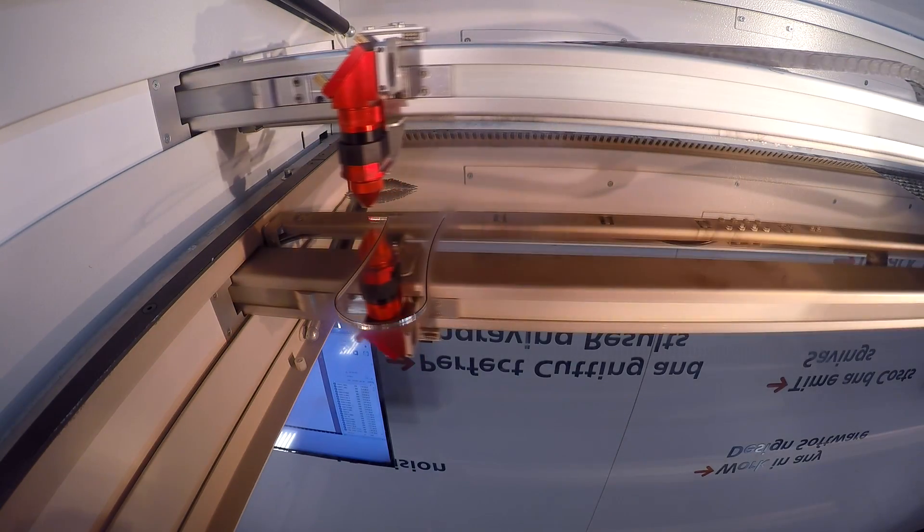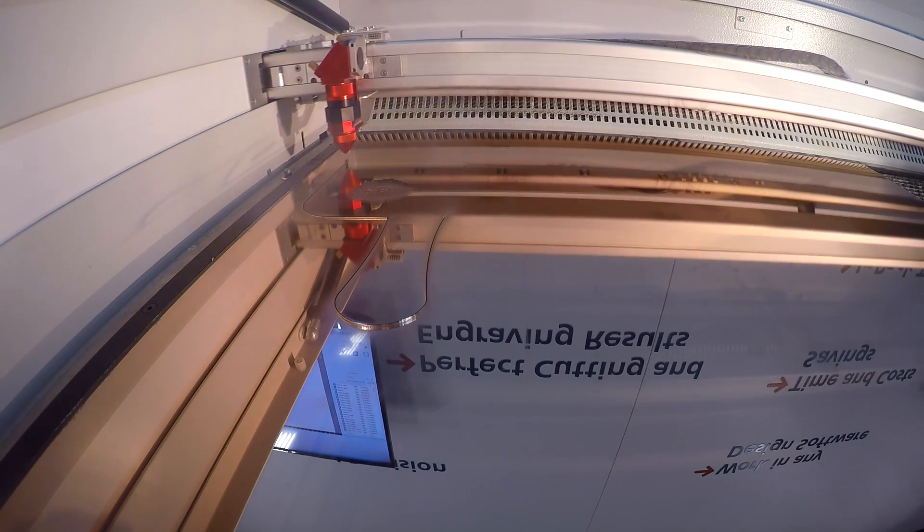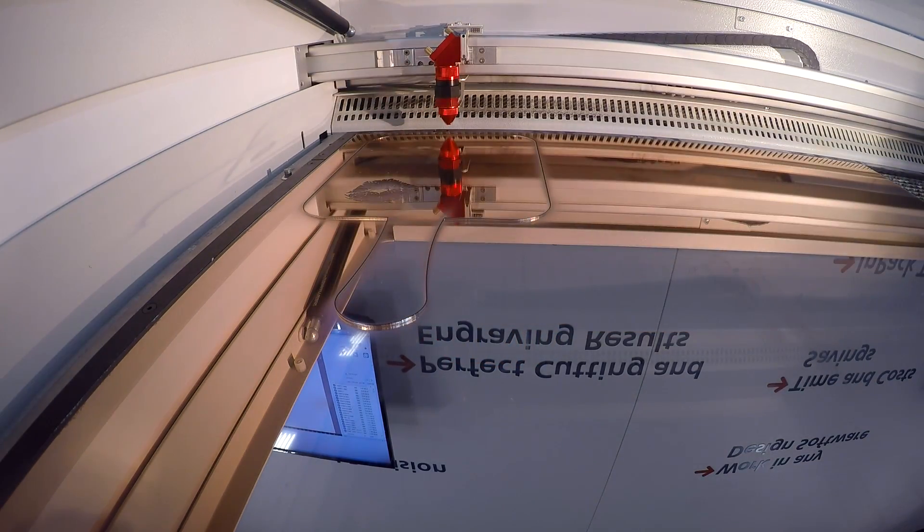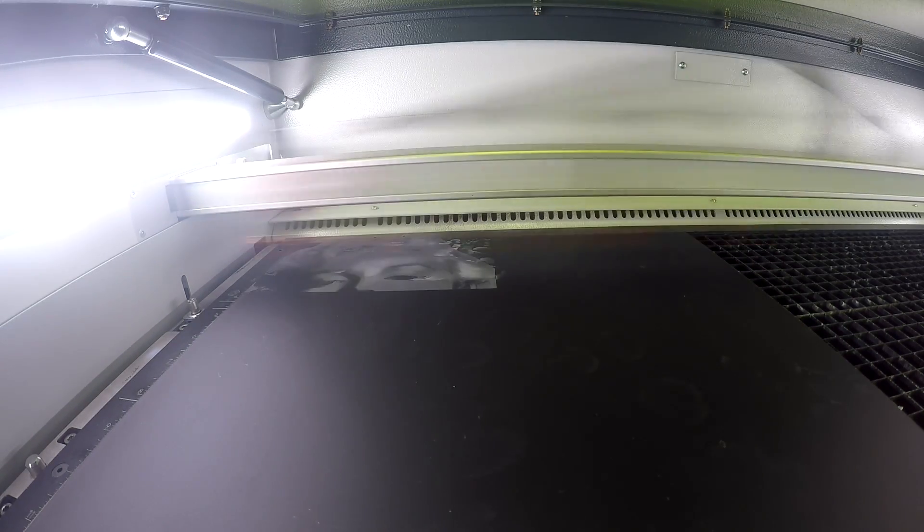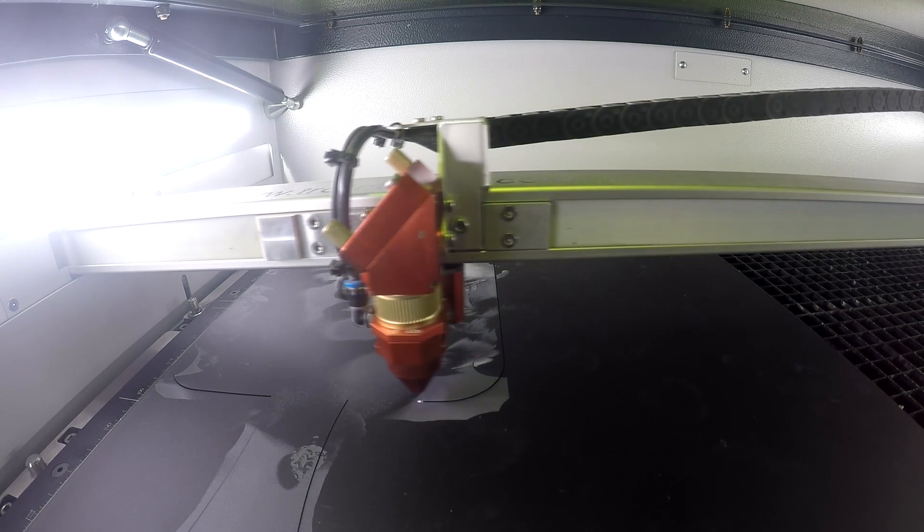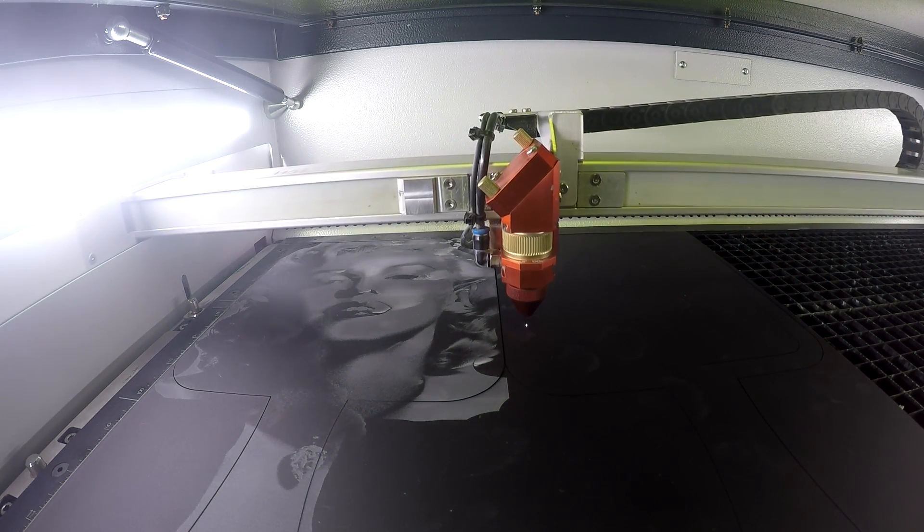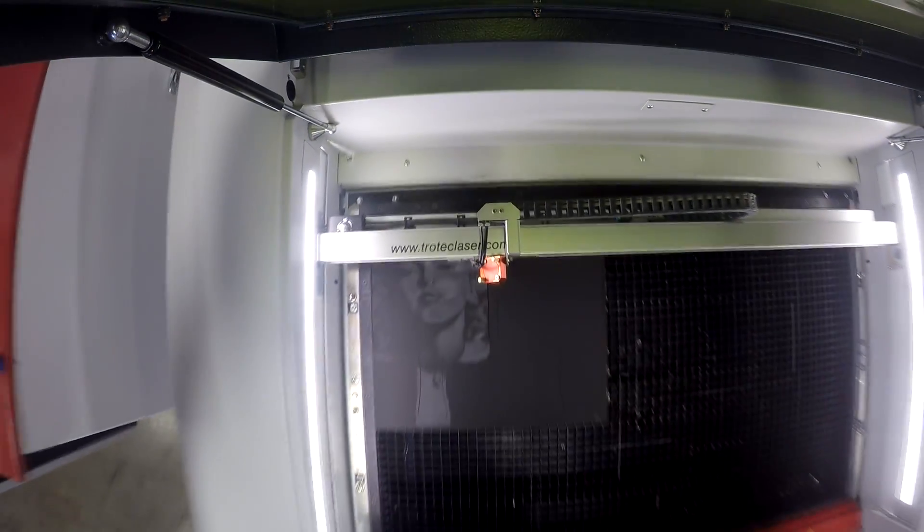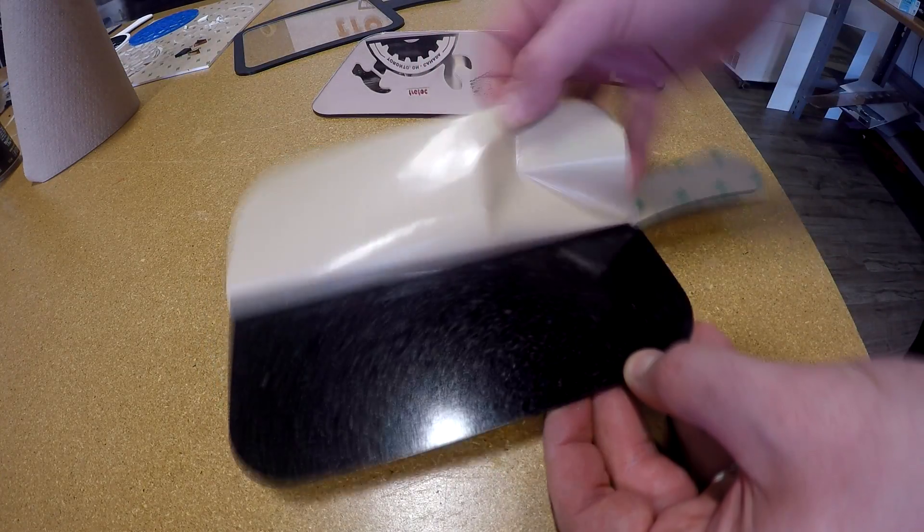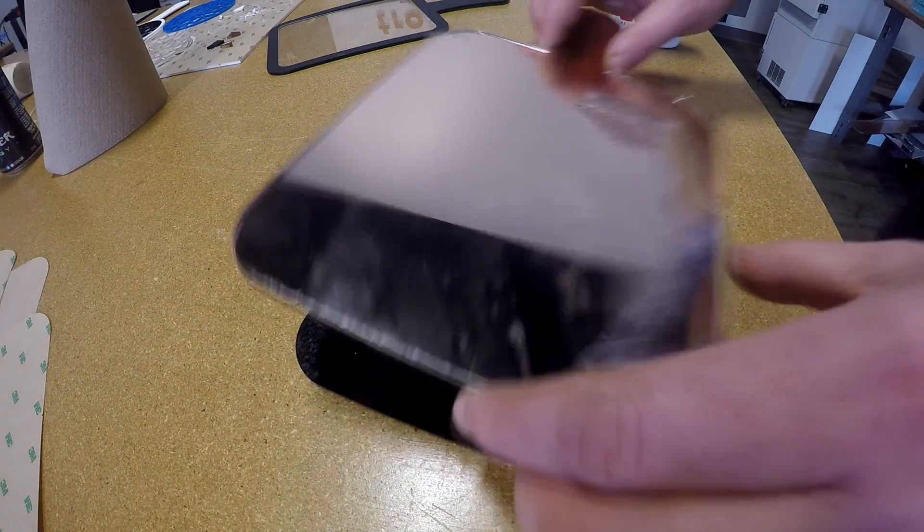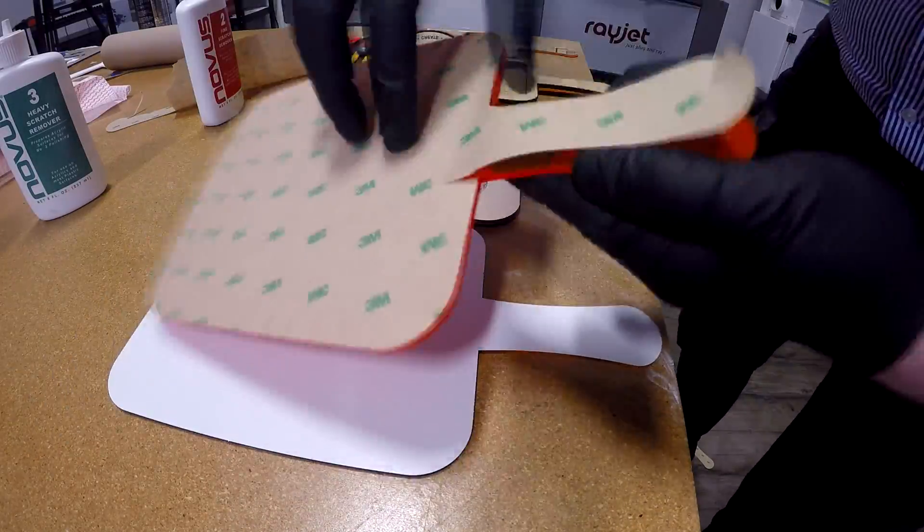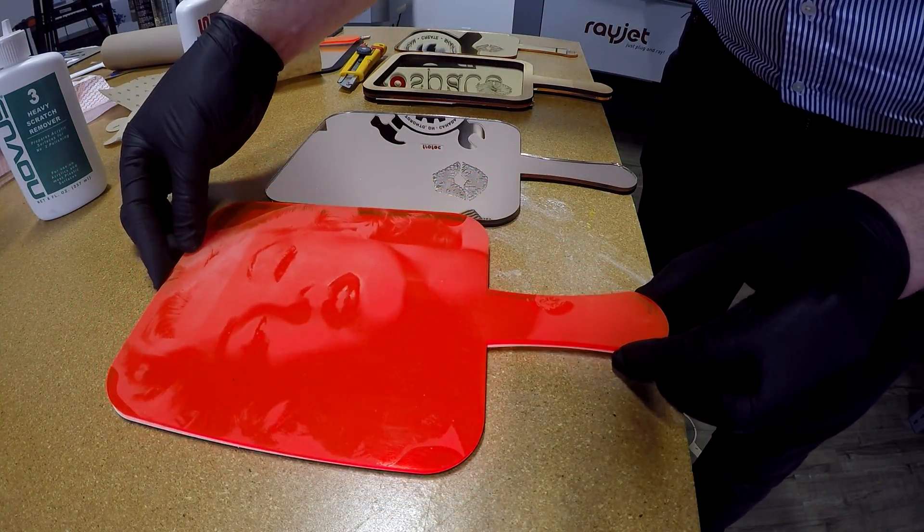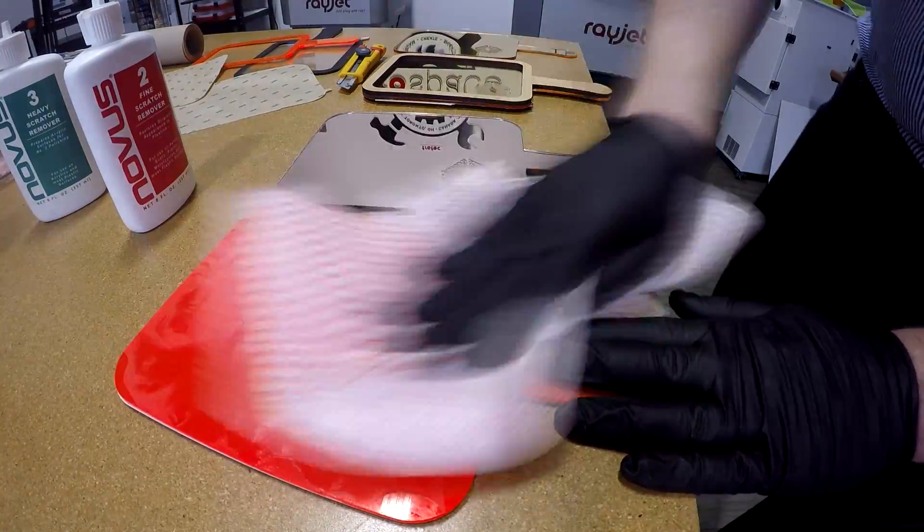We start by grabbing Marilyn Monroe and then cut out our design with a front and back piece. To fit the gold, we then remove the 3M adhesive and glue our three pieces together. We use our Novus acrylic cleaner to wipe out any fingerprints on the high gloss surface.